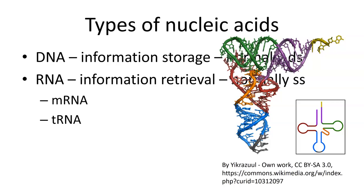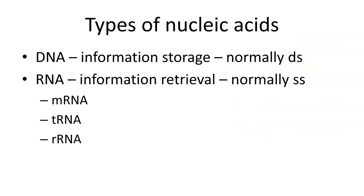We're going to talk about codons, and codons are part of the transfer RNA and also part of the messenger RNA. We have ribosomal RNA or rRNA, and these are interesting because ribosomal proteins and rRNA together make up the ribosomes. The ribosomes are what read the messenger RNA and use the transfer RNA in order to produce polypeptides.